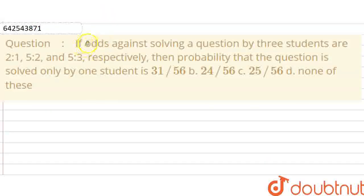Hello students, in this question it is given that if odds against solving a question by three students are 2 is to 1, 5 is to 2, and 5 is to 3, then the probability that the question is solved by only one student is: option A is 31 by 56, option B is 24 by 56, option C is 25 by 56, and option D is none of these.